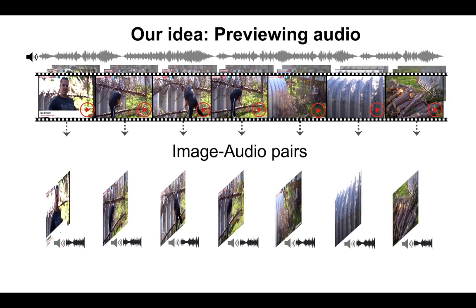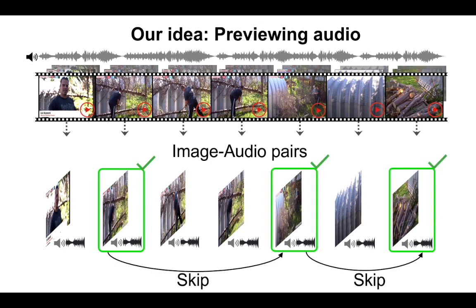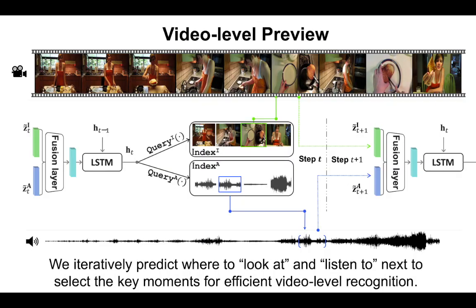Then, based on these image-audio pairs, we design a video-level preview mechanism to select the key moments to perform efficient video-level action recognition. We design an attention-based video-scanning mechanism that iteratively predicts where to look at and listen to next, to select the key moments for efficient video-level prediction.